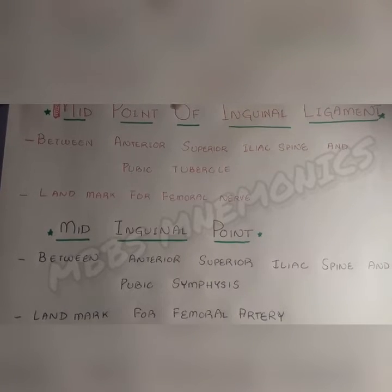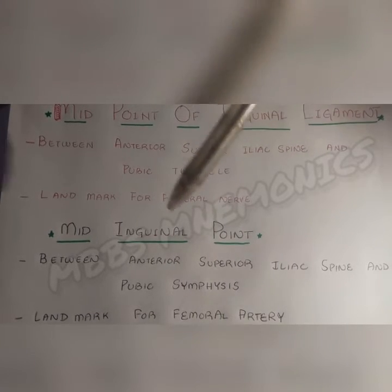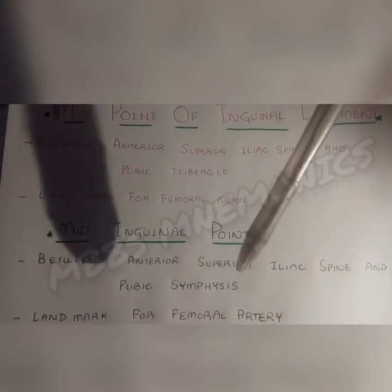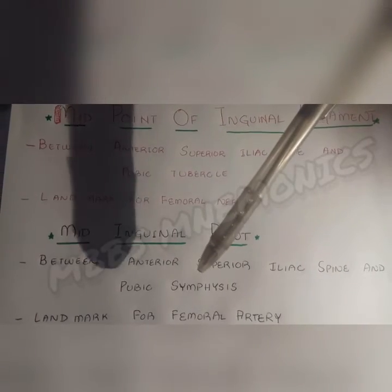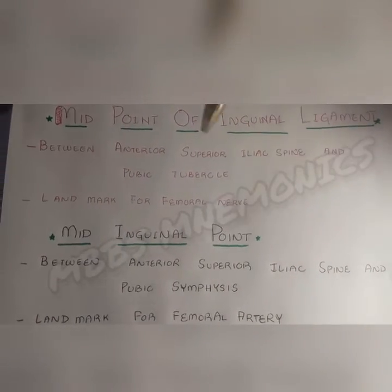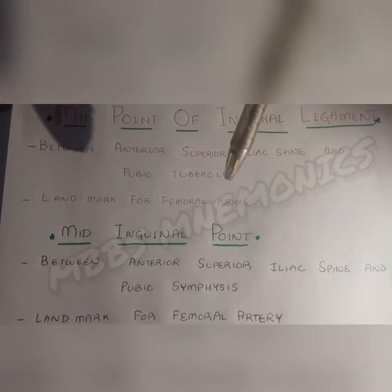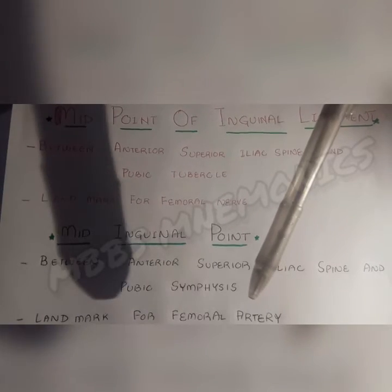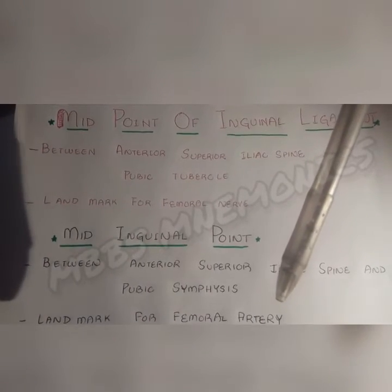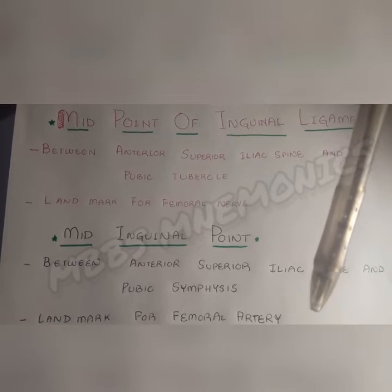While the mid-inguinal point is between the anterior superior iliac spine and the pubic symphysis. The midpoint of the inguinal ligament is a landmark for the femoral nerve, and the mid-inguinal point is a landmark for the femoral artery where you feel the femoral pulse.